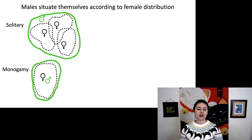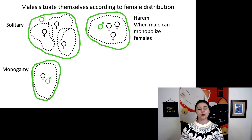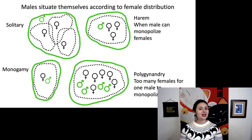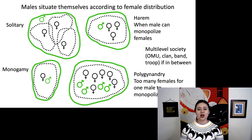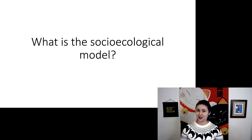Here we might find monogamy if they need to defend specific resources — one male and one female in the same area. If males are able to monopolize females, we might see the formation of a harem. If males are unable to monopolize females, that's where we can find groups with polygyandry. We will find a multi-level society in the middle. So there's a lot here with the socio-ecological model — can you explain it?